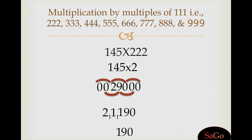Now adjust these carries: write 0 as it is, 9 as it is, 1 as it is. Adjust the carry — 1 and 1 makes 2, write 2. 1 and 2 makes 3, write 3. Our answer is 32,190.